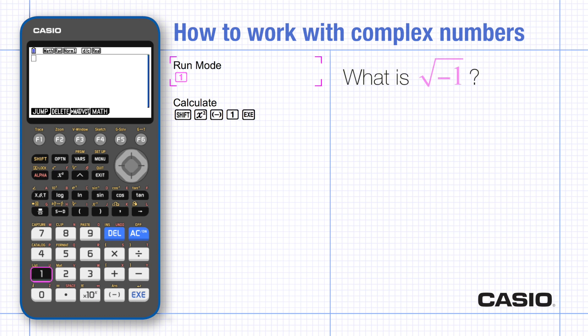In run mode, type the square root of negative 1 and execute. The default setting of real makes an error message appear here.